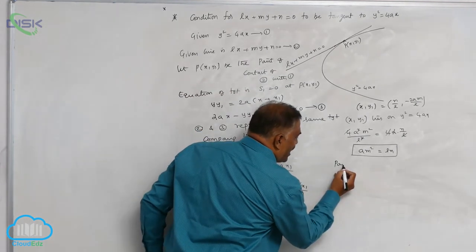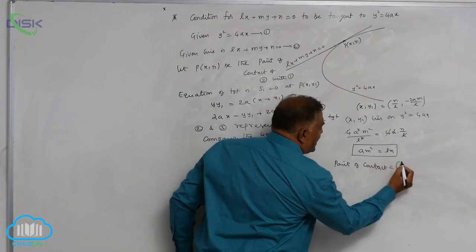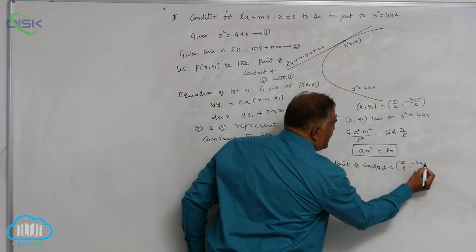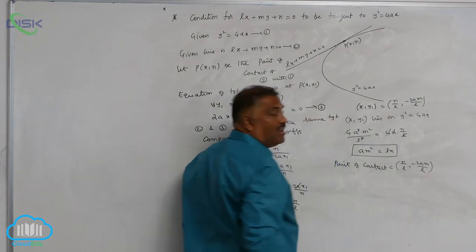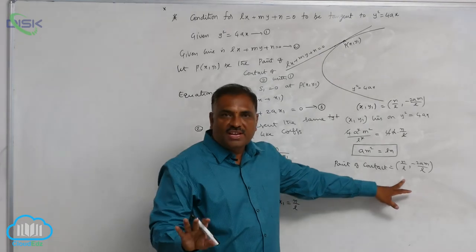Point of contact is given by N by L comma minus 2AM by L. Remember, L is in the denominator; it cannot be 0.